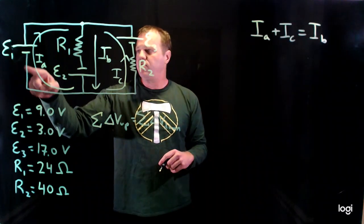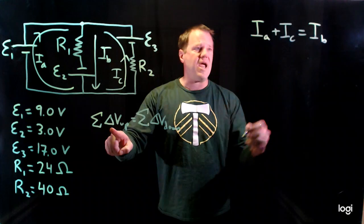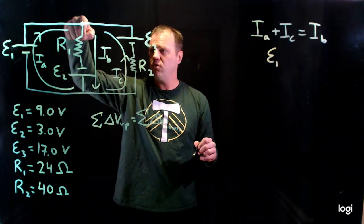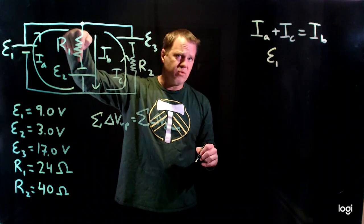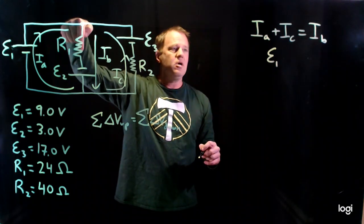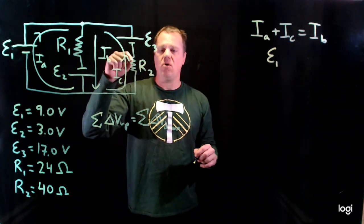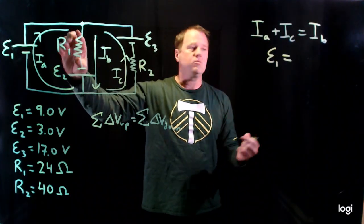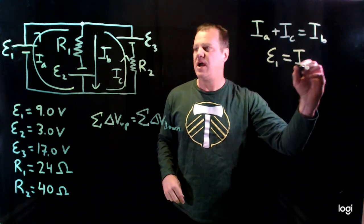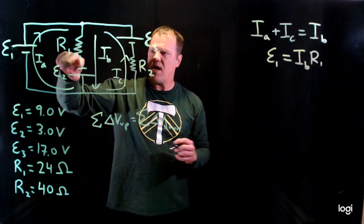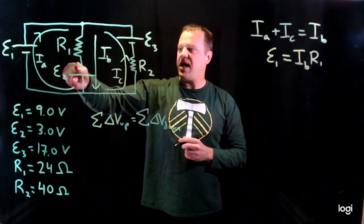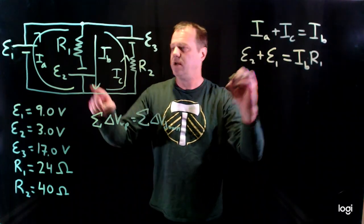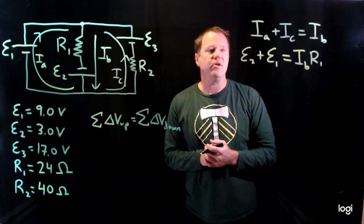Going from the negative to the positive terminal of the battery — that's a gain, so it goes on the left-hand side. Then along the wire, nothing happens, and I go through the resistor. I'm going with the current through this resistor, so that's a drop in voltage — that goes on the right-hand side, equal to I_B times R1 by Ohm's law. Continuing, I go from the negative to the positive terminal of the next battery — also a gain on the left-hand side — then follow the wire back to the starting point. The loop is complete.